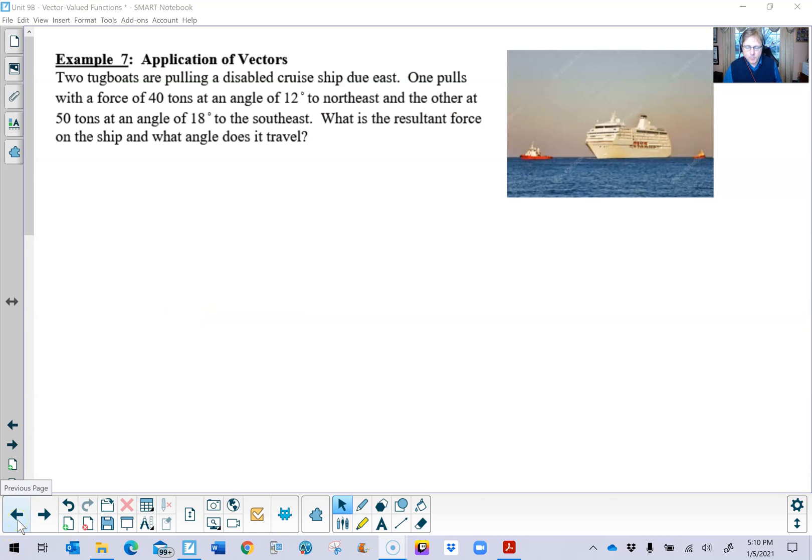Our first example is going to depict two tugboats tugging or pulling a disabled cruise ship. So here is our problem. Two tugboats are pulling a disabled cruise ship due east. One pulls with a force of 40 tons at an angle of 12 degrees to the northeast and the other at 50 tons at an angle of 18 degrees to the southeast.